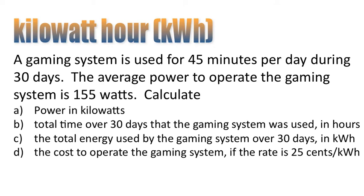Let's look at a typical question. A gaming system is used for 45 minutes per day during 30 days. The average power to operate the gaming system is 155 watts. Calculate: A. Power in kilowatts. B. Total time over 30 days that the gaming system was used in hours. C. Total energy used by the gaming system over 30 days in kilowatt hours. And finally D. The cost to operate the gaming system if the rate is 25 cents per kilowatt hour.